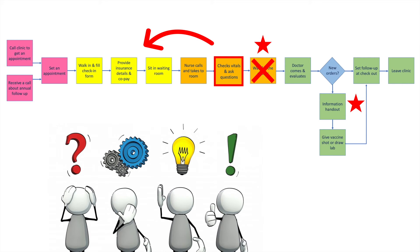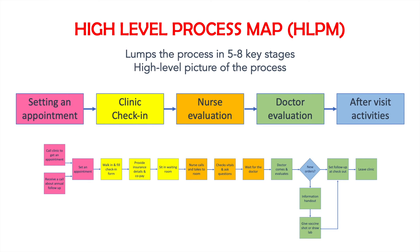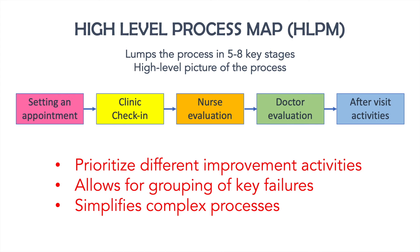Seems like ideas worth testing. Another very helpful tool is a high-level process map. Here the process is lumped into five to eight key steps to give a big-picture view. In this example, a high-level process map could be: scheduling an appointment, check-in, nurse evaluation, physician encounter, and after-visit activities. This helps prioritize areas for different improvement activities and allows for grouping of key failures, and is especially helpful in simplifying complex processes where multiple things can impact the outcomes.